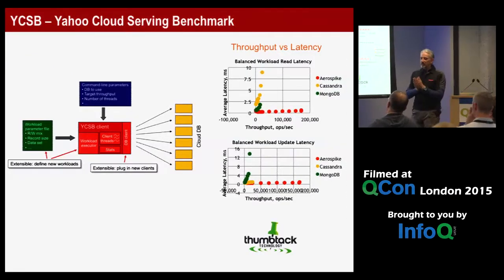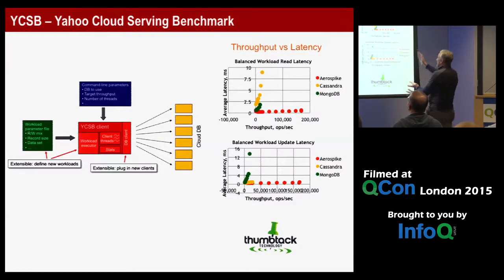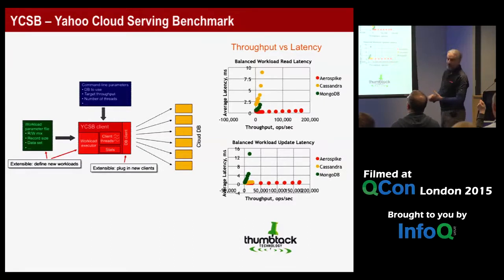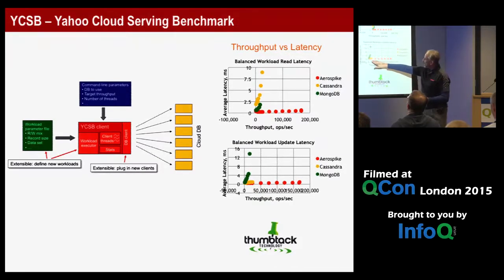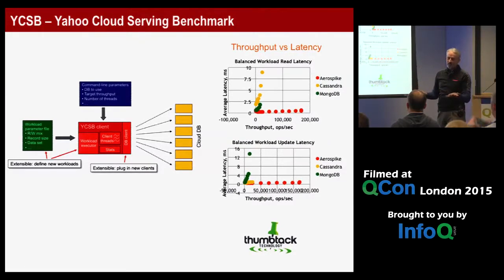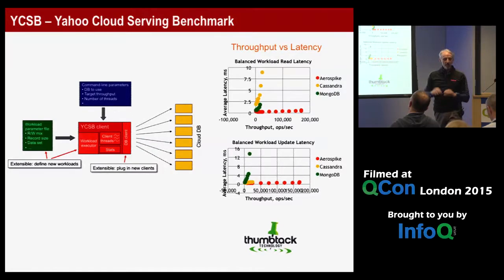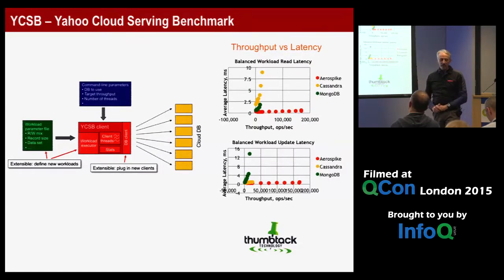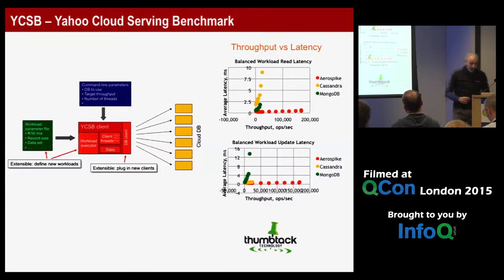A Thumbtack benchmark comparing Aerospike to similar databases shows that as load increases, competitors' latencies spike while Aerospike maintains flat latency — because workload is distributed evenly among servers, data is distributed evenly across devices, and multiple specialized threads keep all CPUs fully utilized with none idle. That's why it works — and those are all the secrets of why Aerospike runs so fast.